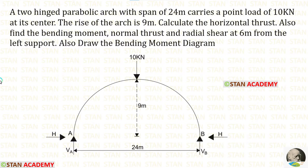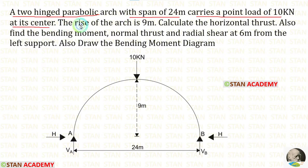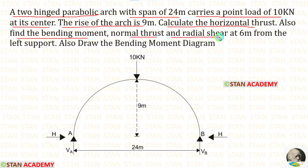Let us read the question and draw the diagram. A two-hinged parabolic arch with a span of 24 meters carries a point load of 10 kN at its center. The rise of the arch is 9 meters. We need to calculate the horizontal thrust, and also find the bending moment, normal thrust, and radial shear at 6 meters from the left support, and draw the bending moment diagram.